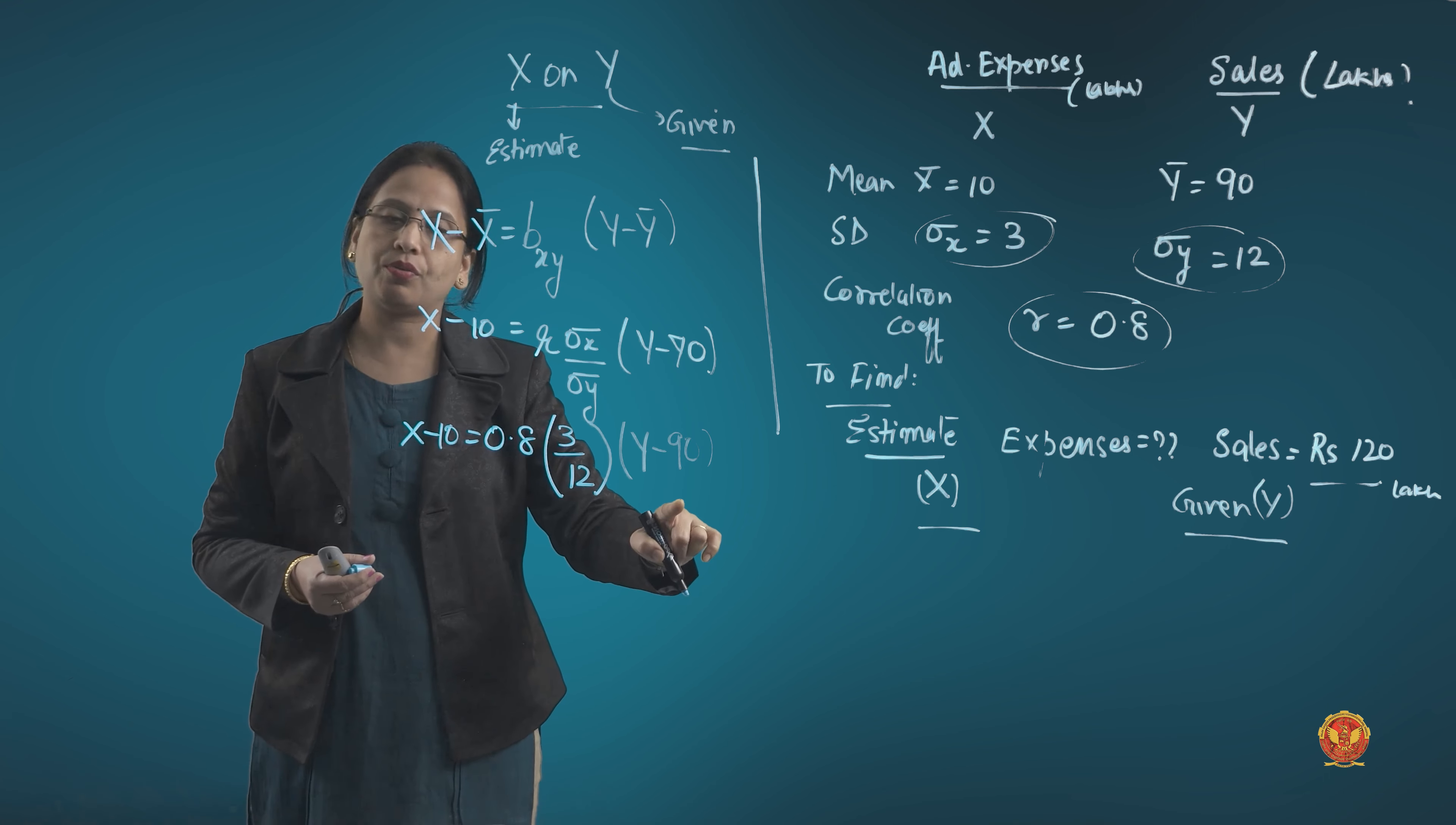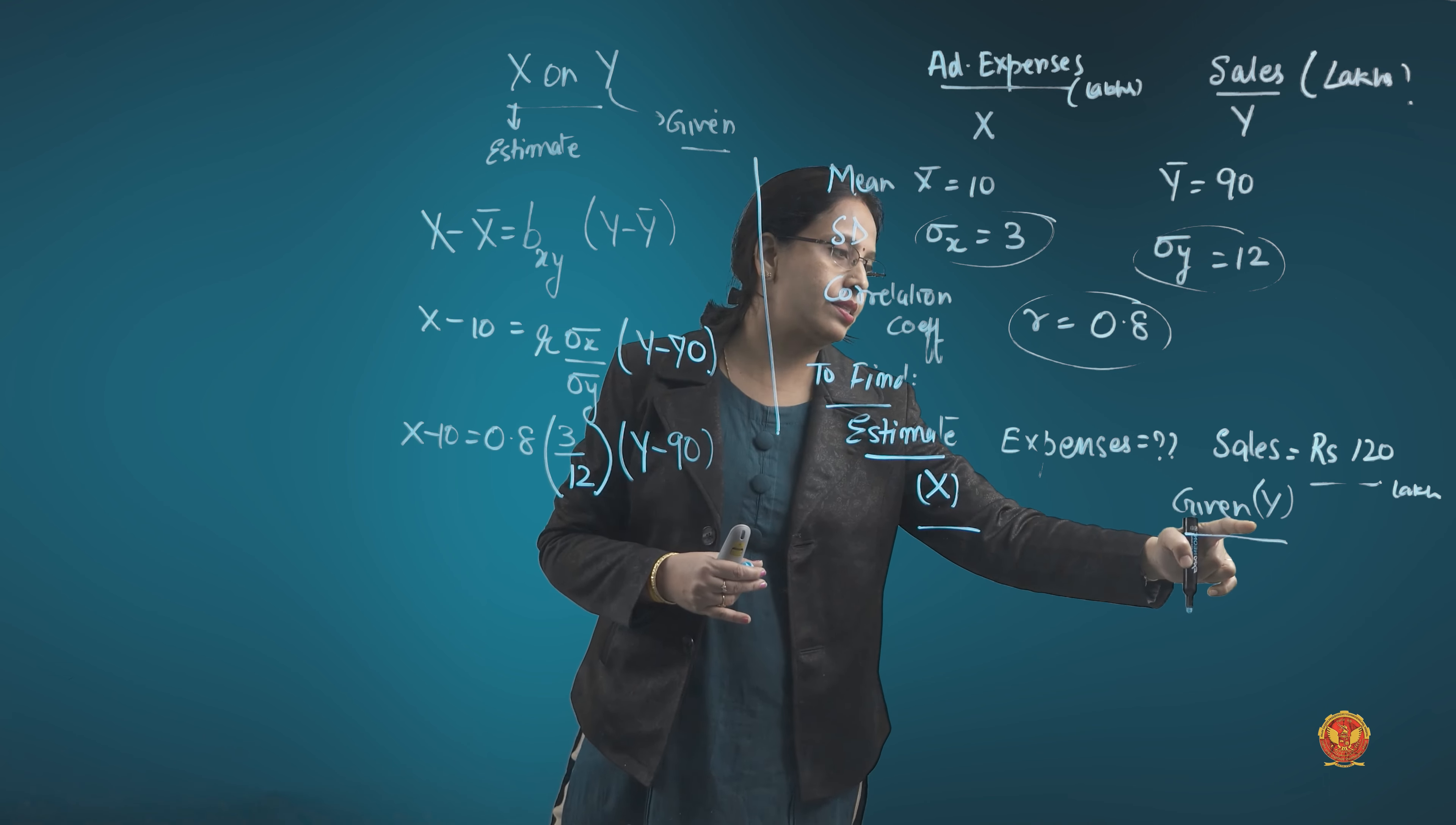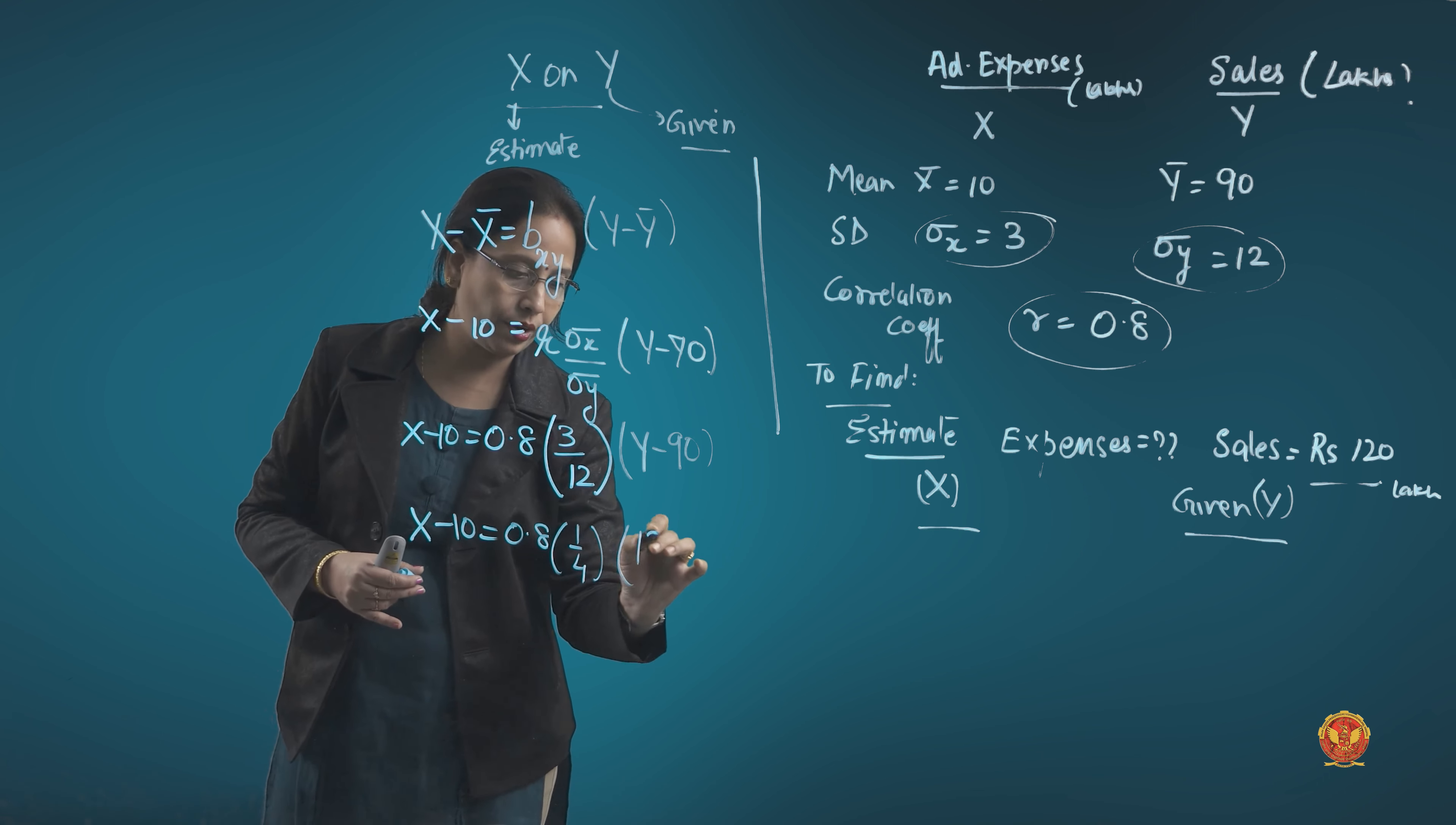The equation will come in the form of x and y variables. But before I solve it, just to speed up the process, because they already have asked you to estimate x given the sales, y is 120. Why not put that directly to estimate x?